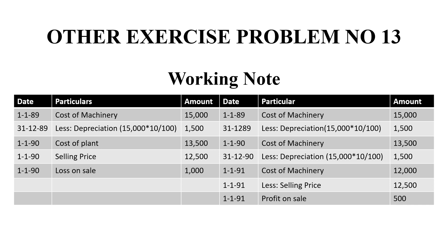We will continue to use the remaining machines but will sell two machines. The first one: on 1-1-1989, the cost of the machine is Rs.15,000. On 31-12-1989, depreciation is Rs.15,000 × 10/100 = Rs.1,500. So on 1-1-1990, the book value is Rs.13,500, but we sold it for Rs.12,500, giving a loss on sale of Rs.1,000.